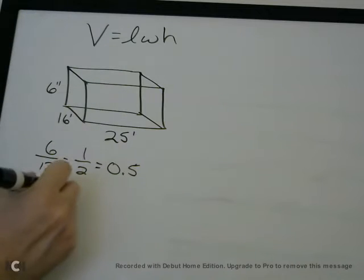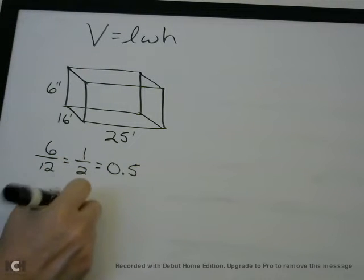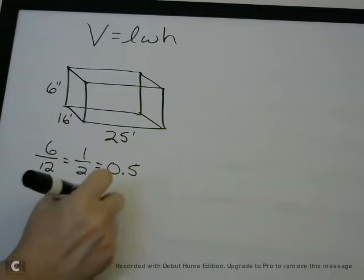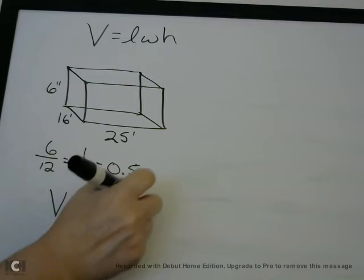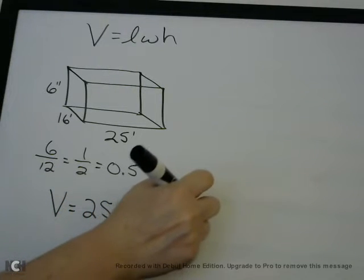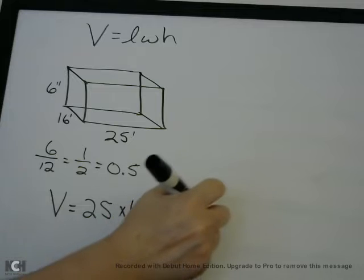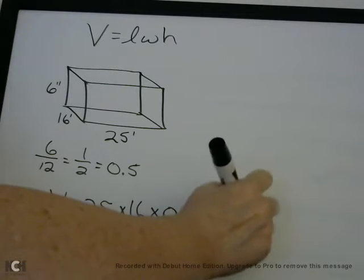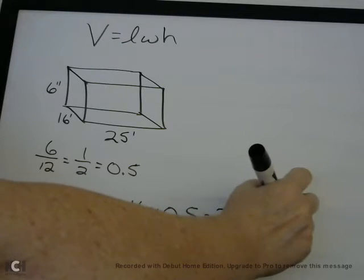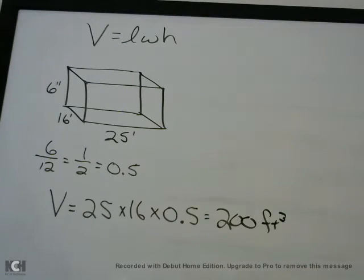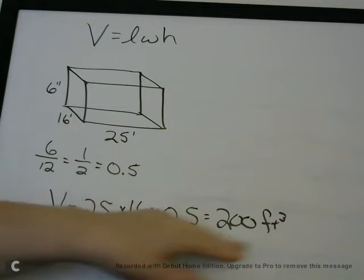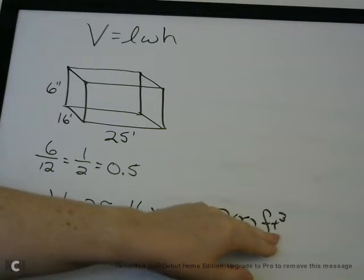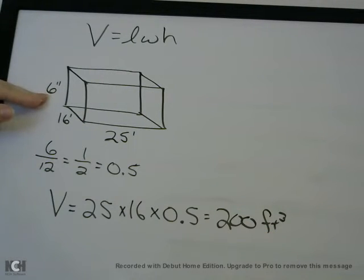Now we can get our formula sheet out: 25 times 16 times 0.5. If you do that, you're going to get 200 feet cubed. Just be careful: if they start mixing units, you need to make sure they're all the same units, because the answer is feet cubed — if one dimension is still in inches, that doesn't make sense.